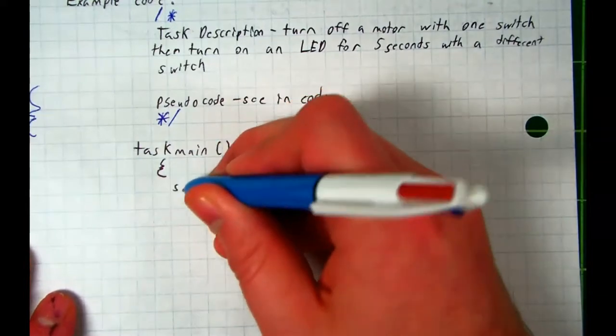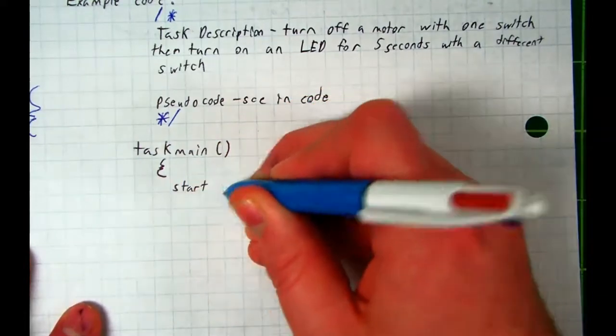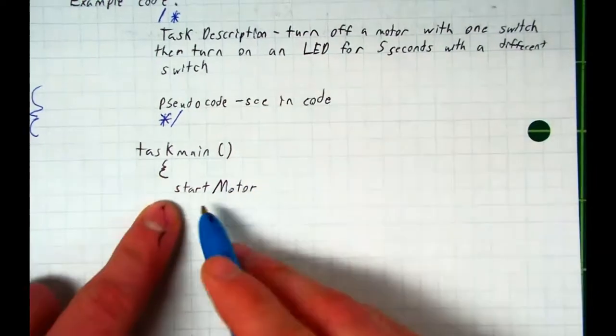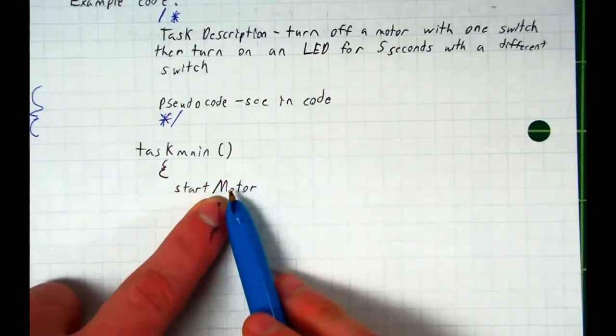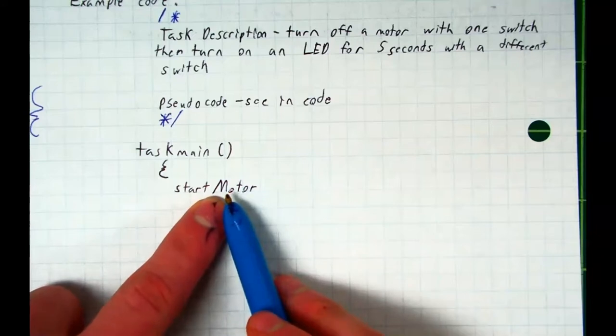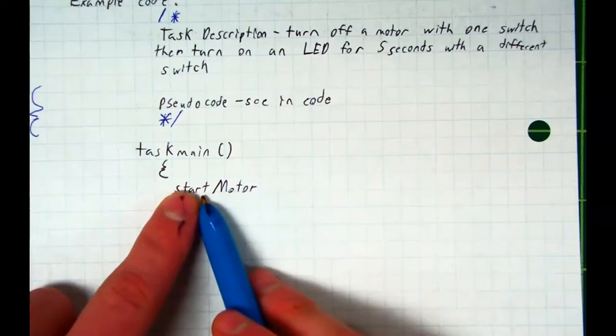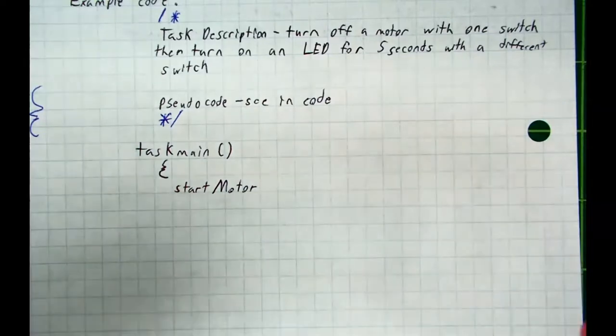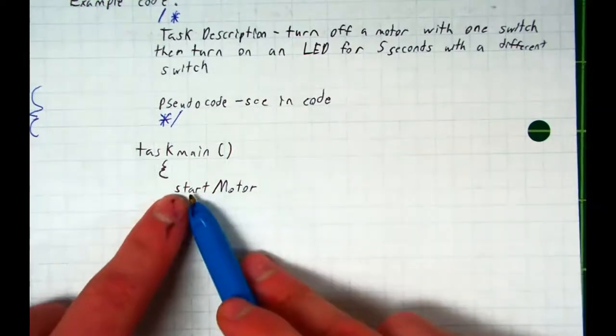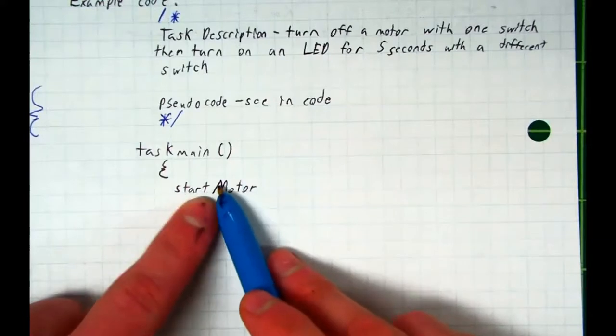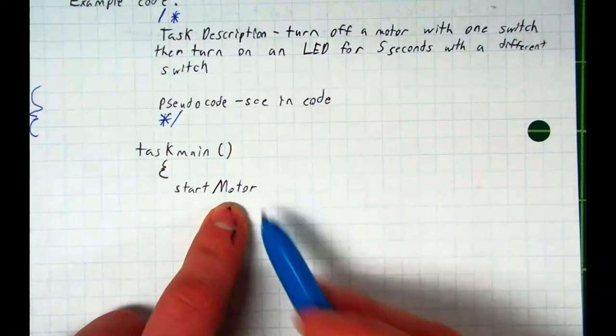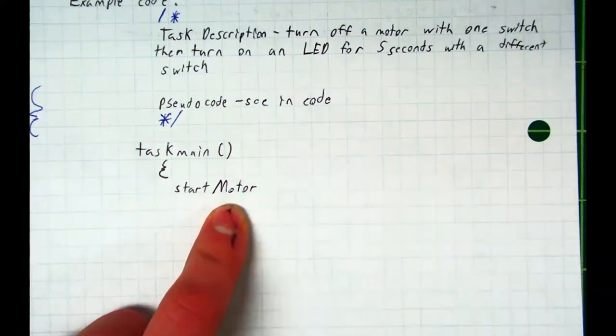...startMotor—lowercase s, start, capital M, motor, no spaces. Hopefully it's obvious why we capitalize the second letter or second word, first letter second word. Adding spaces can make it kind of weird in the code. Is there one space? Is there two spaces? This way you can tell when the second and third words start.